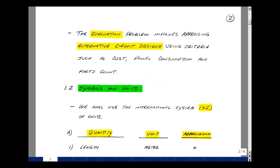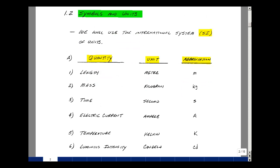We'll take a look at an idea called the evaluation process, and this involves appraising alternative circuit designs using criteria such as cost, power consumption, and part count. In the course, we're going to use the international system of units, and let's review what those options are.